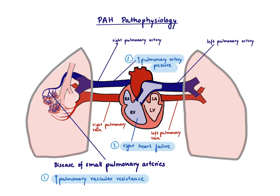So what is the consequence when we have disease and narrowing in these small pulmonary arteries? The consequence is that we end up with more resistance — increased pulmonary vascular resistance. If you have more resistance here, we're going to have a higher pressure in the pulmonary artery. And if you have higher pressure in the pulmonary artery, the right ventricle needs to work much harder, because it needs to work against this increased pressure.